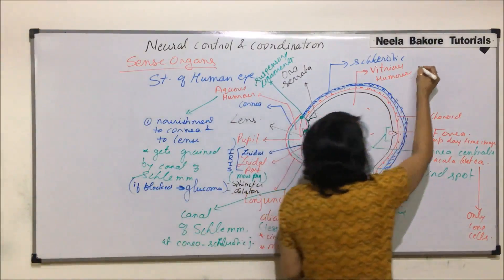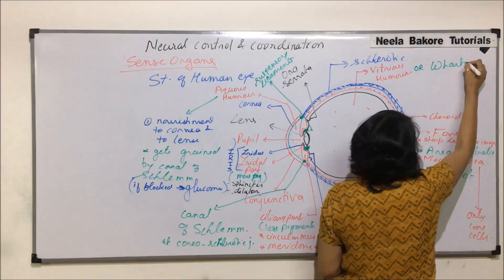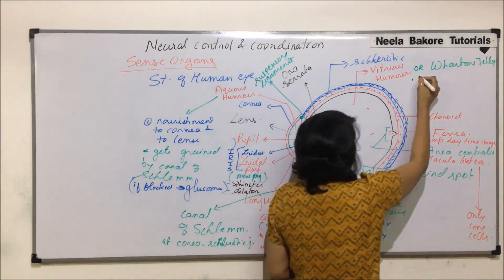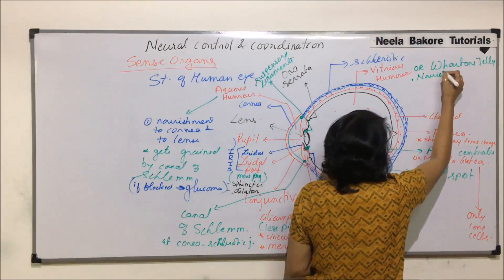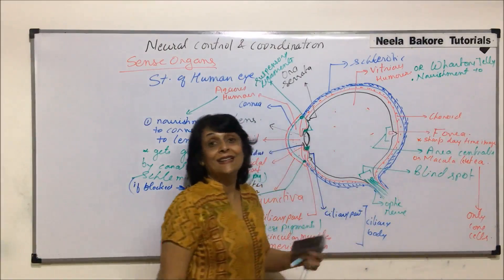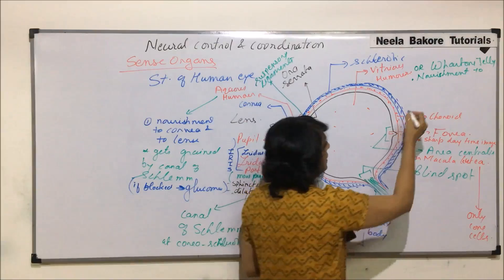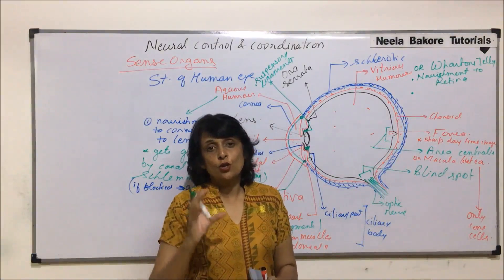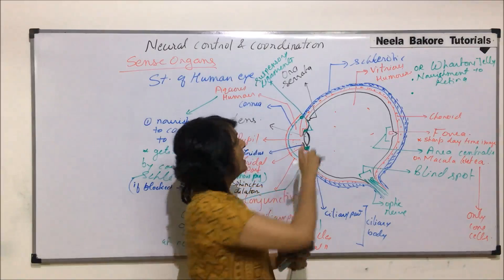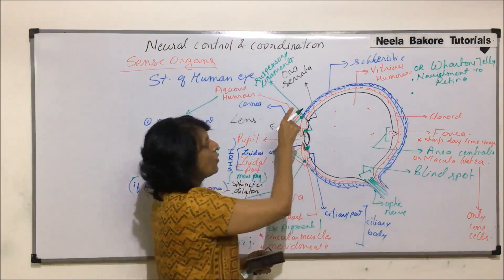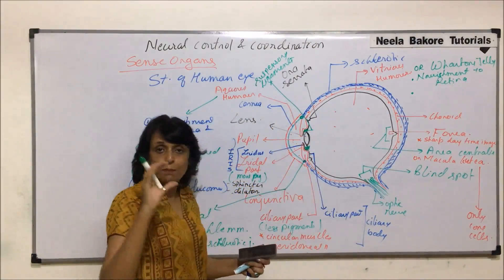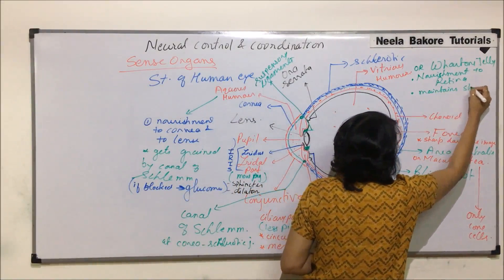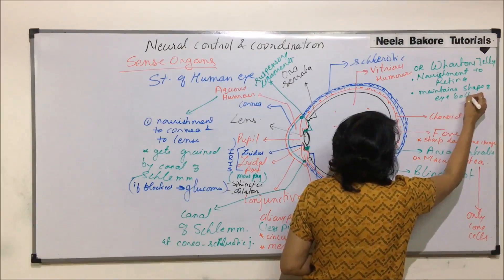The second liquid is vitreous humor, which is also known as Wharton's jelly. It also performs certain important functions. First, it provides nourishment to the retina. Second, it is responsible for maintaining the shape of the eyeball. The shape of the eyeball is maintained by two main structures: the outermost fibrous layer, the sclerotic, and the vitreous humor filling the larger posterior compartment.